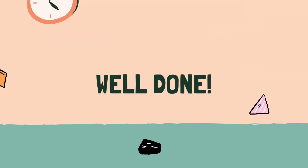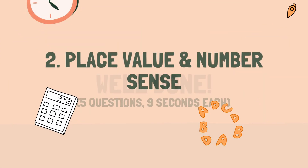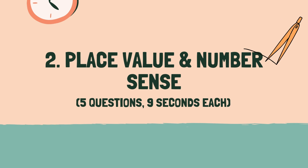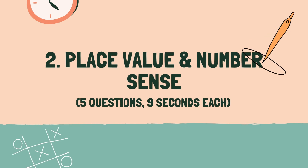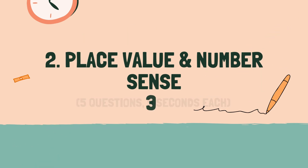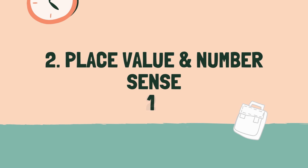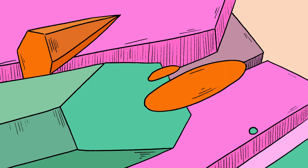Well done. Let's move on to the next category. Category 2: Place value and number sense. 3, 2, 1, go.